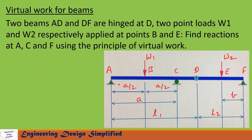As shown in the picture, two beams AD and DF are hinged at D. At A, C, E and F there are supports, and two point loads W1 and W2 are applied at points B and E. The lengths are given as shown in the figure: from A to B is a/2, from B to C is a/2, so from A to C is a. From A to D is L1, from D to F is L2, and from E to F is b. We need to find reactions at A, C and F using the principle of virtual work.